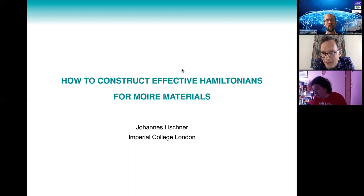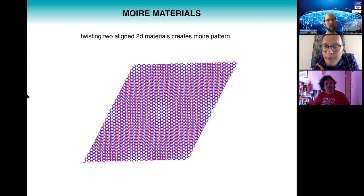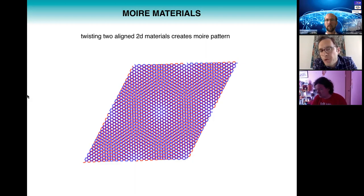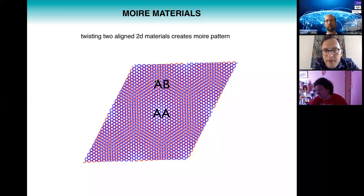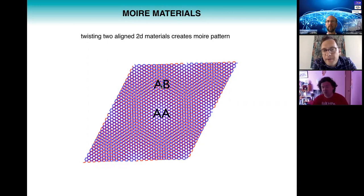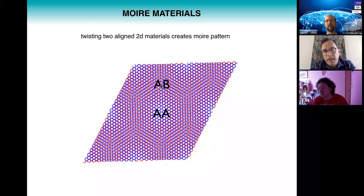I will try to be pedagogical — there won't be a lot of equations. I'll start by showing you a moiré pattern, which is what you get when you take two identical two-dimensional crystals, put them on top of each other, and rotate one against the other. What you create is a superstructure where there are some regions where the lattices are directly on top of each other — we call this an AA region — and other regions where the atoms in the bottom layer are in the center of the hexagons of the top layer, called the AB or BA regions. What emerges is a new crystalline structure with a much larger lattice constant than the original atomic lattice.